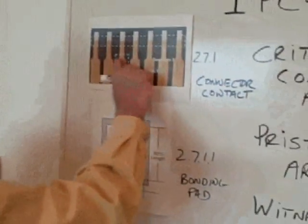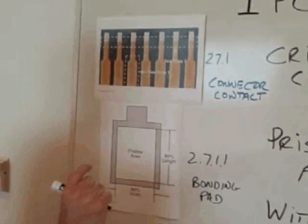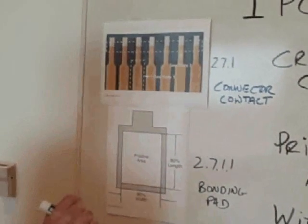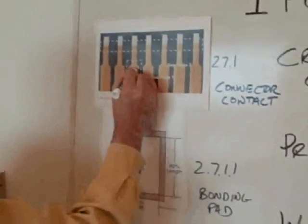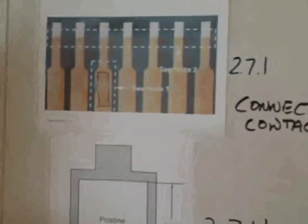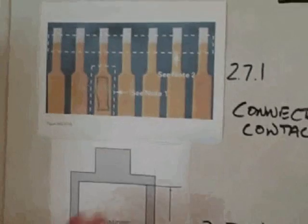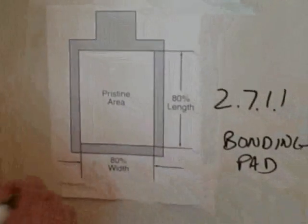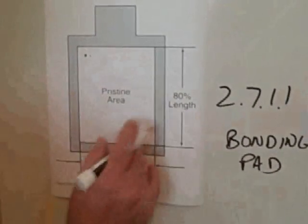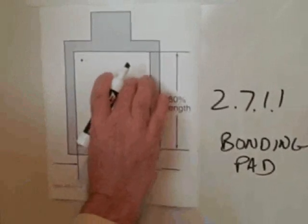Essentially, the intent of both critical contact area and pristine area are the same. The committees have the same intent, which really is that the center or most critical portion of your connection is free of defects. What they want is that in this area — your connector finger — that area should be very untouched and undamaged, because you're going to depend on that for your connection. And 2.7.1.1 is a bonding pad: you're going to bond a wire here, so you want this center area to be pristine or undamaged.